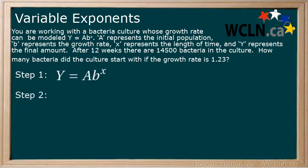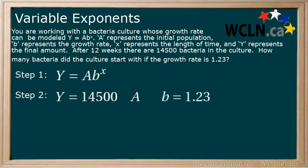Step 2: Identify the different variables and any known values from the question. We have y, the final amount, which from the question we see is 14,500. We have a, the initial amount, which we're solving for. We have b, the growth rate, which is 1.23. And x, which is time passed, which is 12.